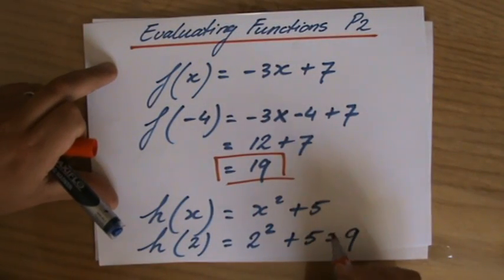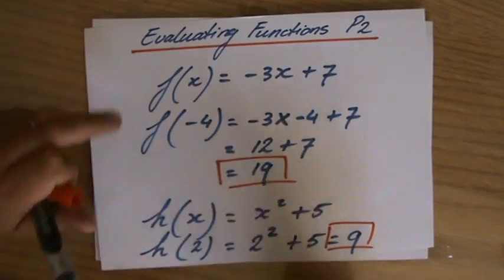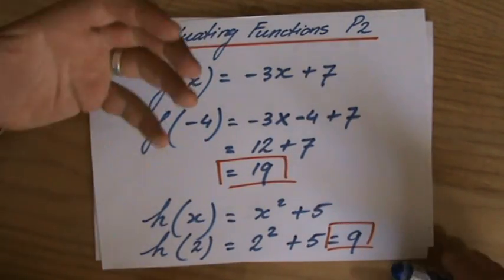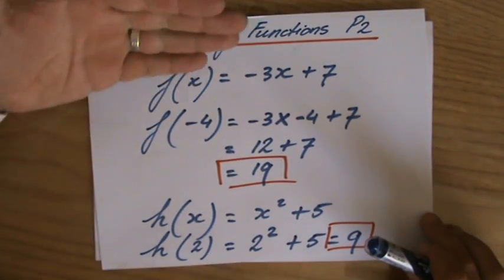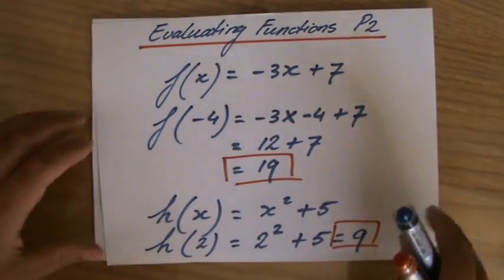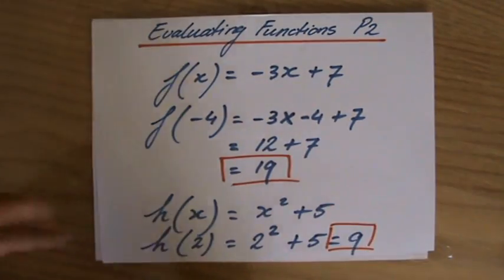So to distinguish between two different functions, we usually start with f(x), and then they will continue to h(x), or g(x), or i(x), in that part of the alphabet. It all means the same, it's the function where x is the variable, x squared plus 5.